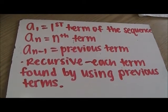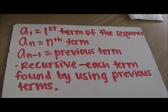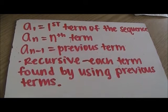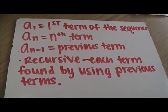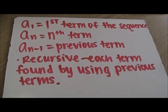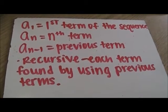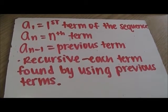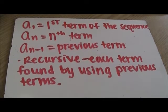The first term is a sub 1 — that's the first term of each sequence. a sub n is the nth term. And a sub n minus 1 is the previous term.